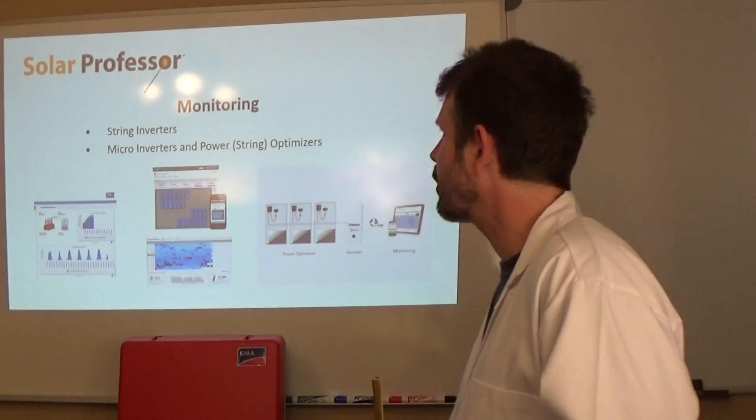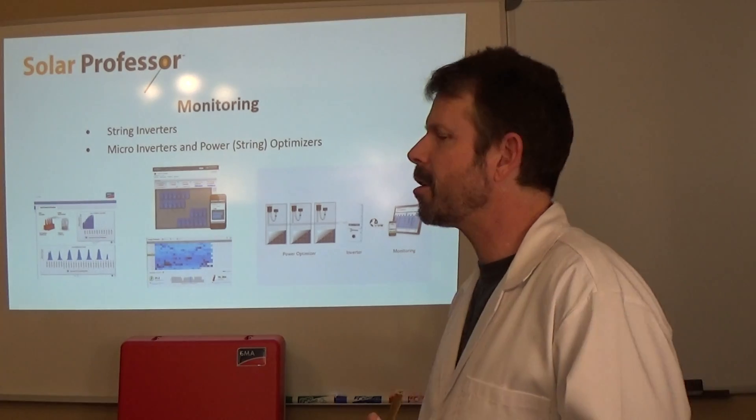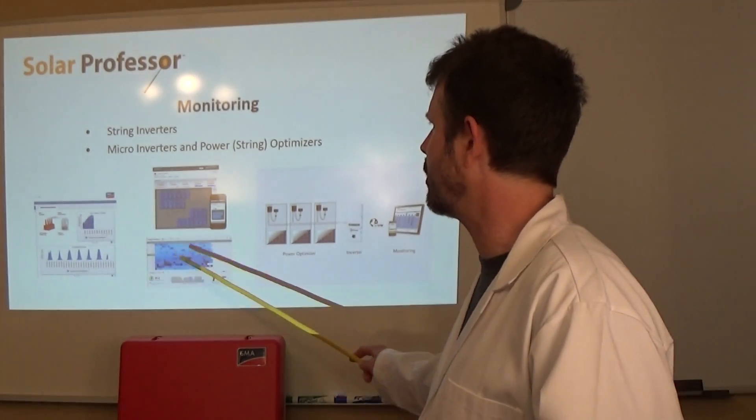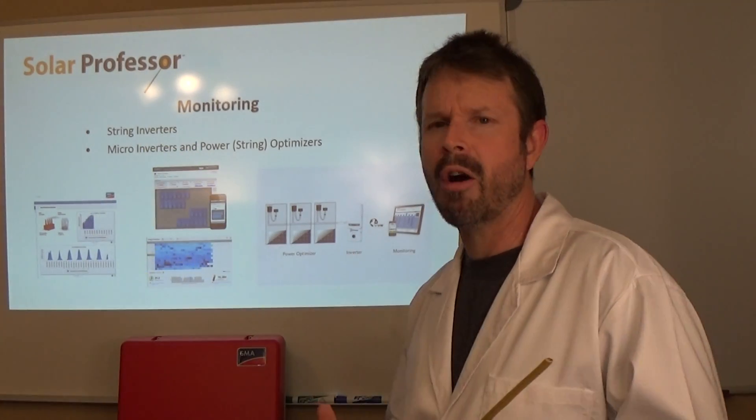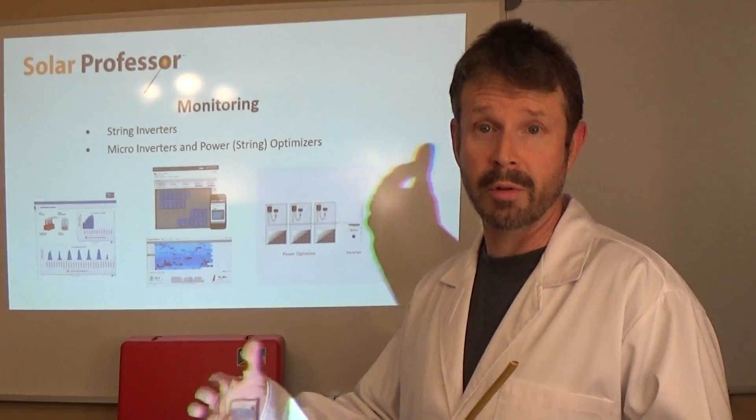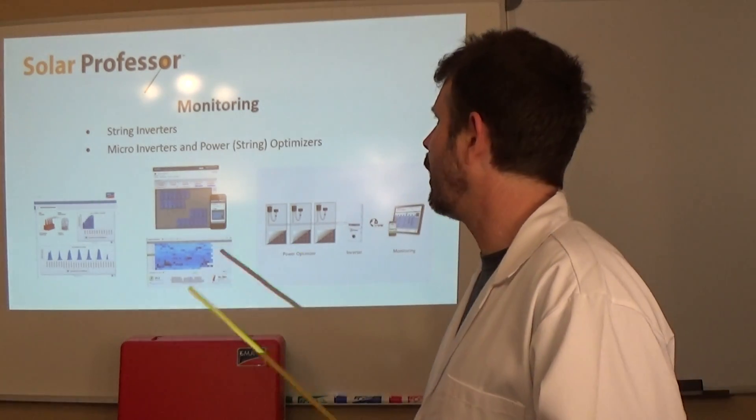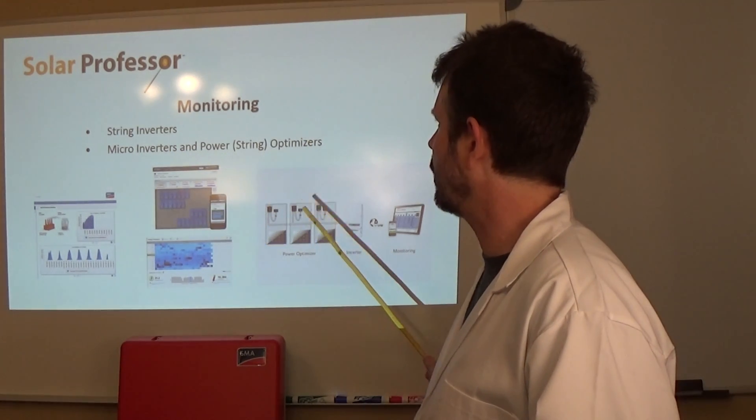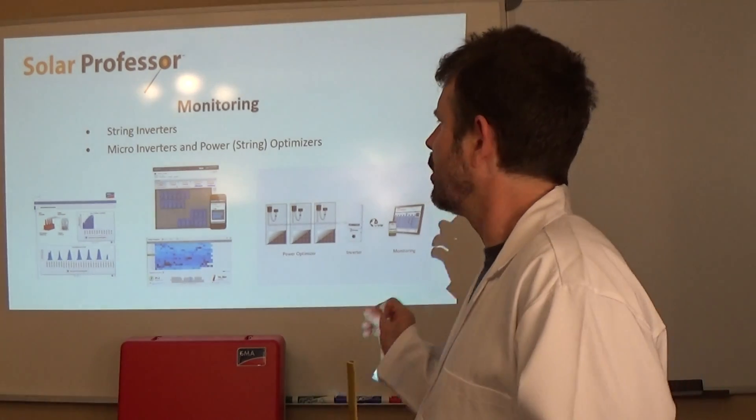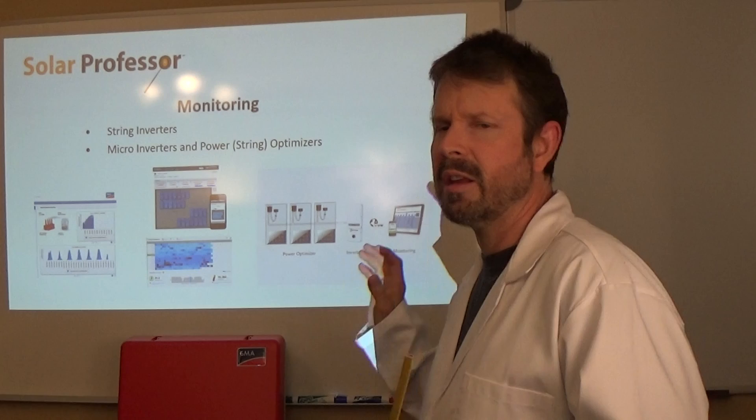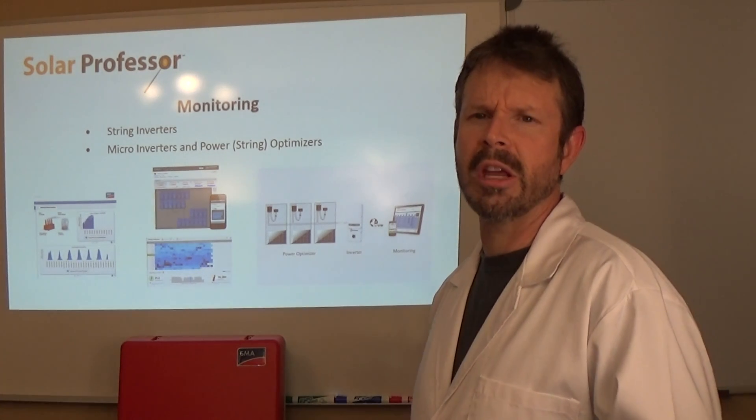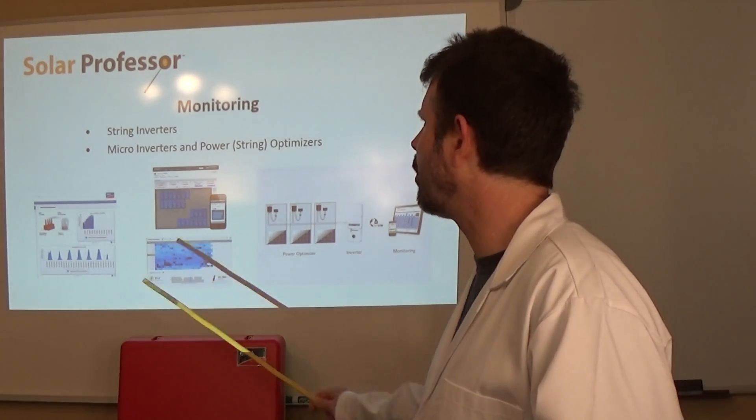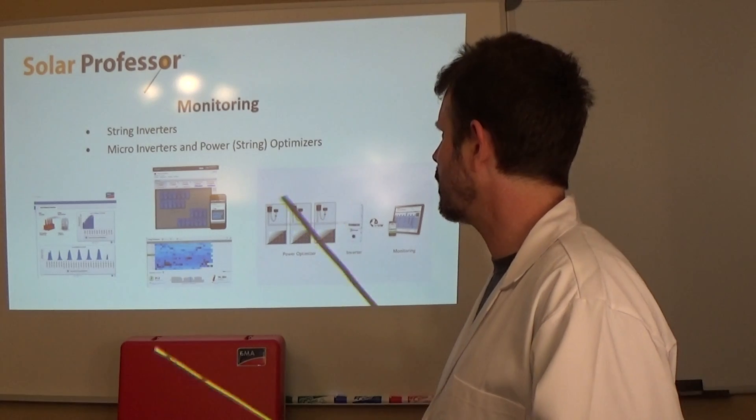Inverters are fantastic these days because of the monitoring that they offer. String inverters allow you to see the power production of that solar system, the entire array. An advantage to both micro inverters and power optimizers is that you can see the individual production from each solar panel and that is a huge advantage, especially in residential applications. We're mostly leaning towards the micro products or the power optimizer products because they have this fantastic monitoring.